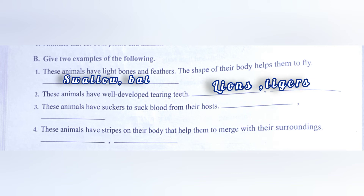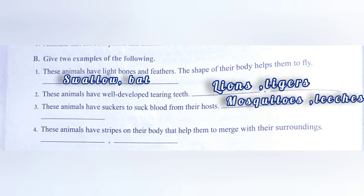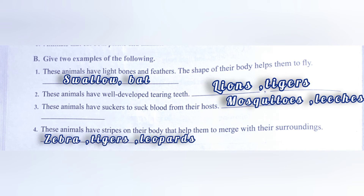Third: these animals have suckers to suck blood from their hosts — bugs, mosquitoes, and leeches. Fourth: these animals have stripes on their body that help them to merge with their surroundings — zebra, tiger, or leopard.